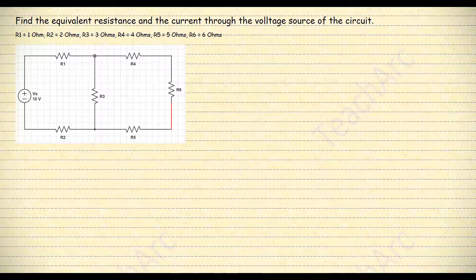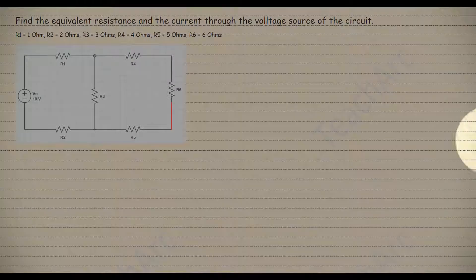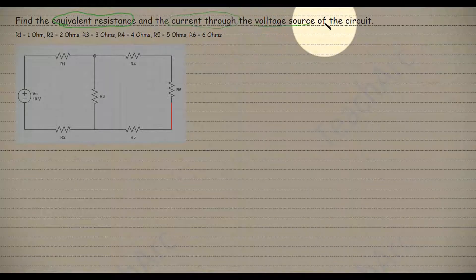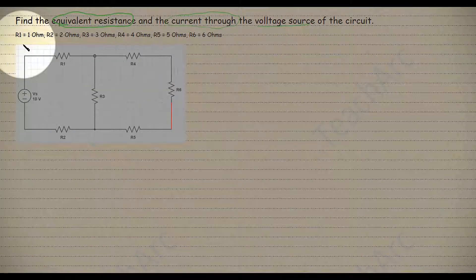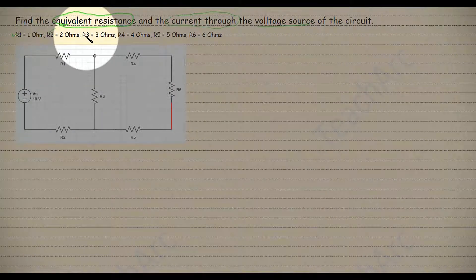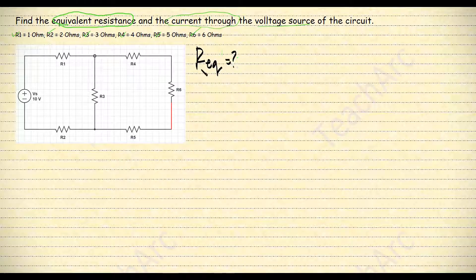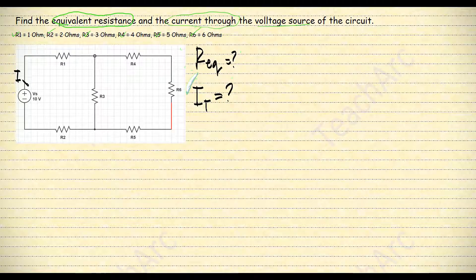I can demonstrate these methods by applying them to an example. Find the equivalent resistance and the current through the voltage source of the circuit. The values of the resistors are given below. This problem is not that difficult, so before applying the ARC method, let's try the regular one and compare the answers later on.